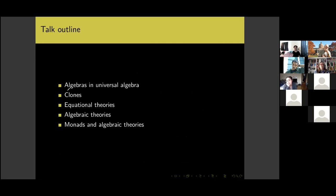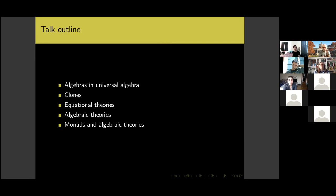First I'm going to talk about what algebras are in universal algebra, then the concept of clones, then equational theories. Once I have enough background set up, you will have a picture of many things Lawvere was thinking about when he first defined his algebraic theories. Then I can give the definition of an algebra of an algebraic theory with examples, and finally discuss the relationship between monads and algebraic theories.